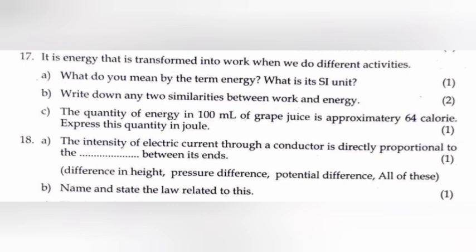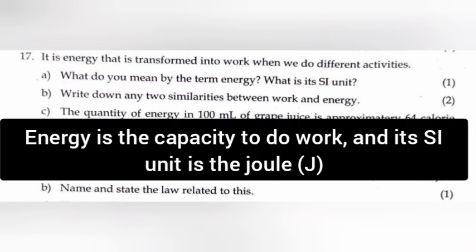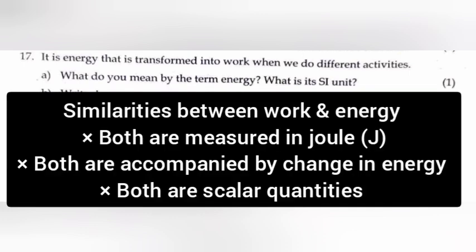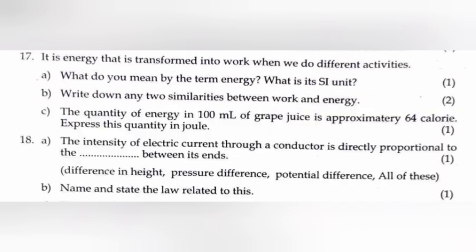Question 17: It is energy that is transformed into work when we do different activities. A: What do you mean by the term energy? What is its SI unit? Answer: Energy is the capacity to do work and its SI unit is Joule. B: Write down any two similarities between work and energy. Answer: Similarities between work and energy: Both are measured in Joule. Both are accompanied by change in energy. Both are scalar quantity.